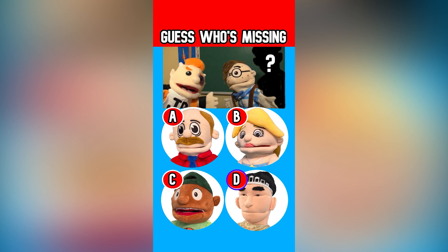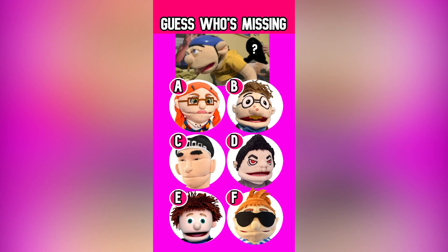Follow me if you want to watch more SML related videos. Can you guess which SML character is missing in the picture? The answer is D, Bully.